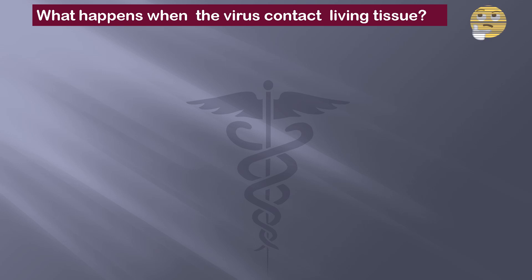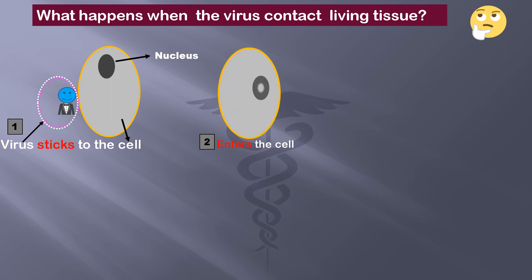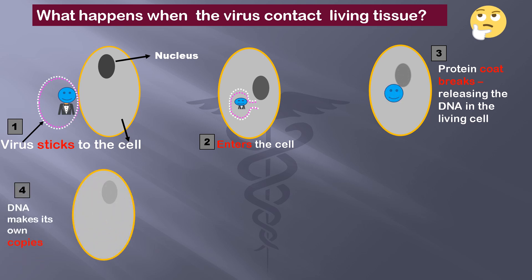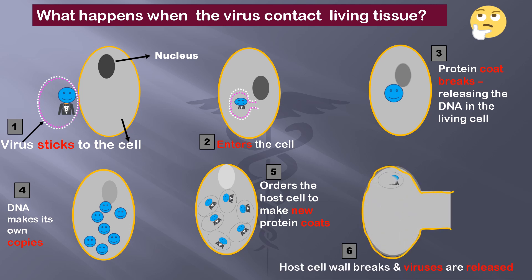What happens when these parasites come in contact with living tissue? The virus first sticks to the cell then enters inside. Once inside the host cell, their protein coat breaks and the viral DNA or RNA is released inside the cytoplasm. This DNA then moves into the nucleus of the cell and manipulates the host nucleus to make copies of itself and also its protein coat. It then leaves the nucleus, breaks the host cell wall, and many more viruses are released.